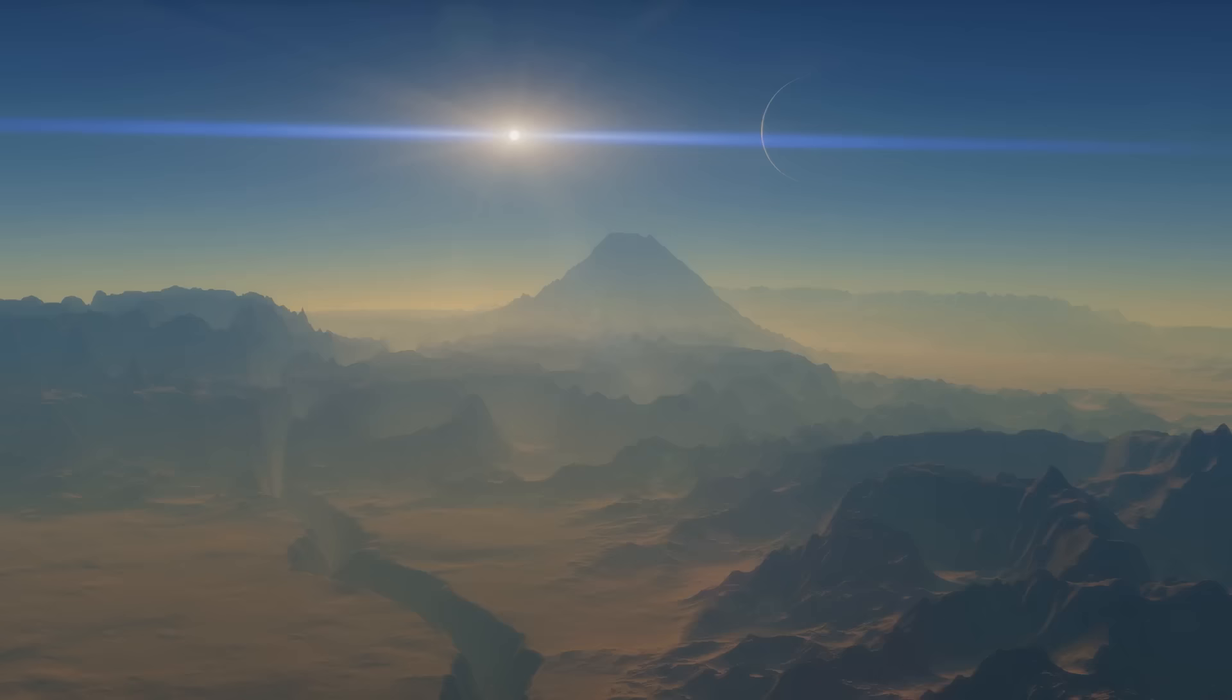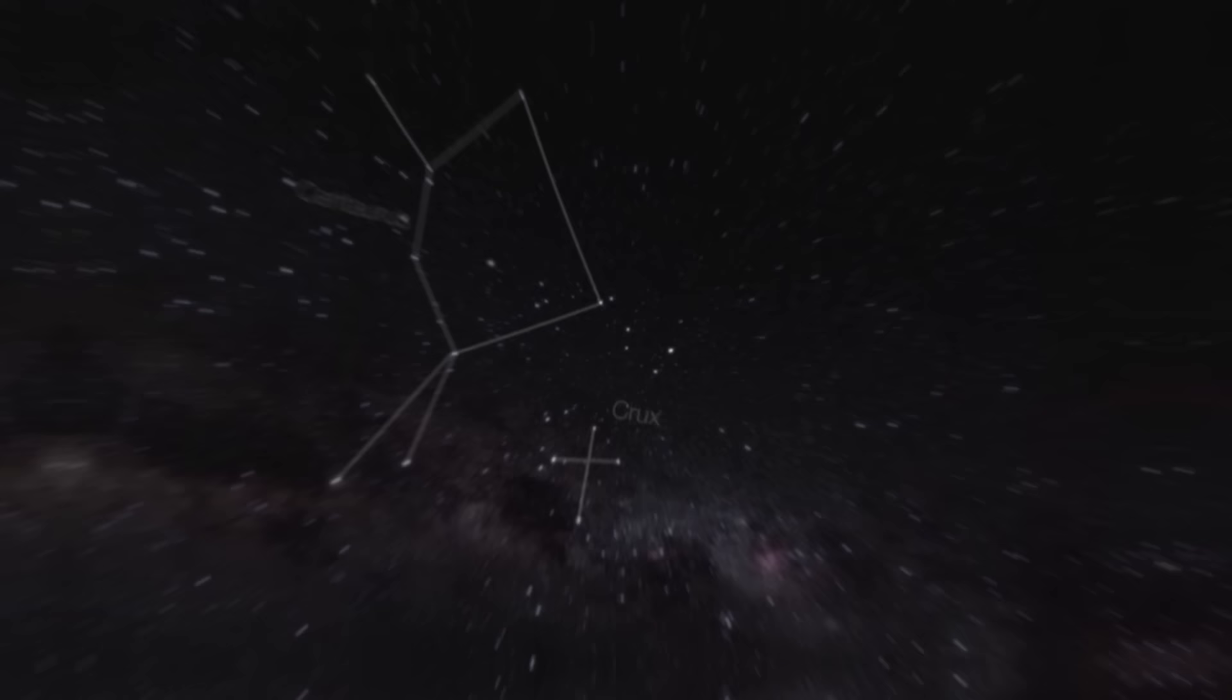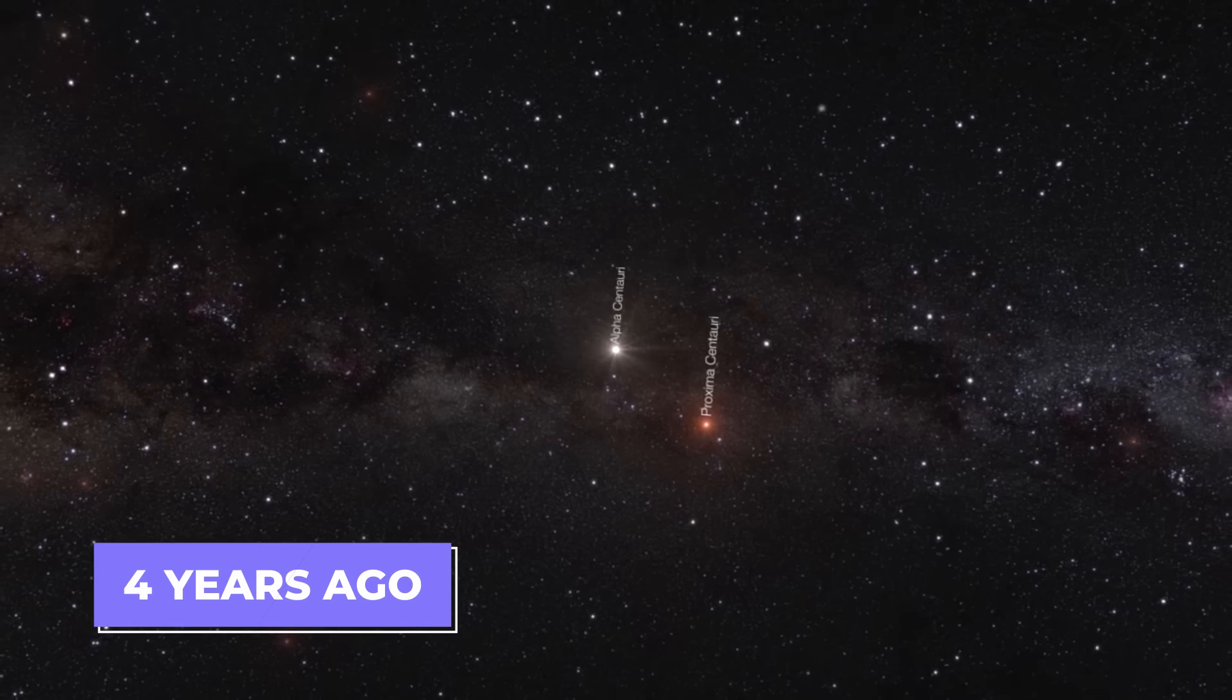The discovery of Proxima B is remarkable. We are viewing the Alpha Centauri system as it was four years ago. By observing it, we can see its state in the past. The Alpha Centauri system is around four light-years away from us.